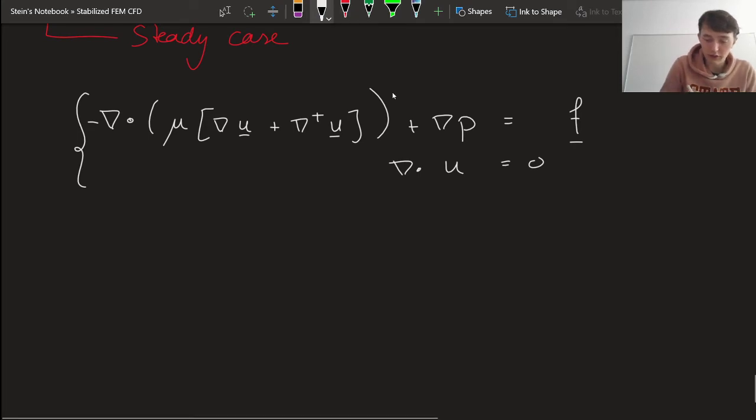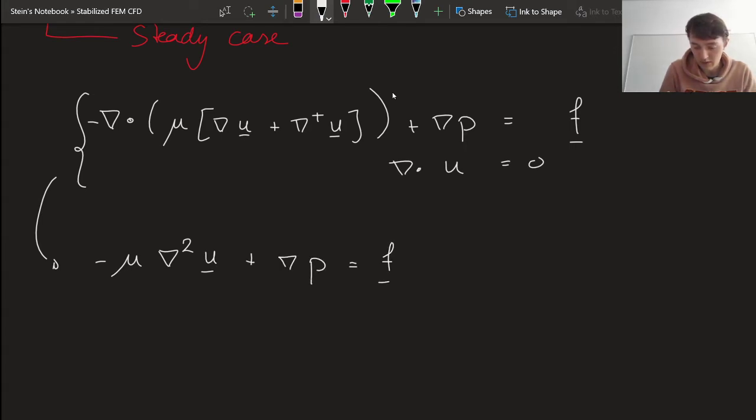And then, so this is one way of writing the Stokes equations. But the more typical way that you would see these equations is like this. And the divergence of u is equal to zero.